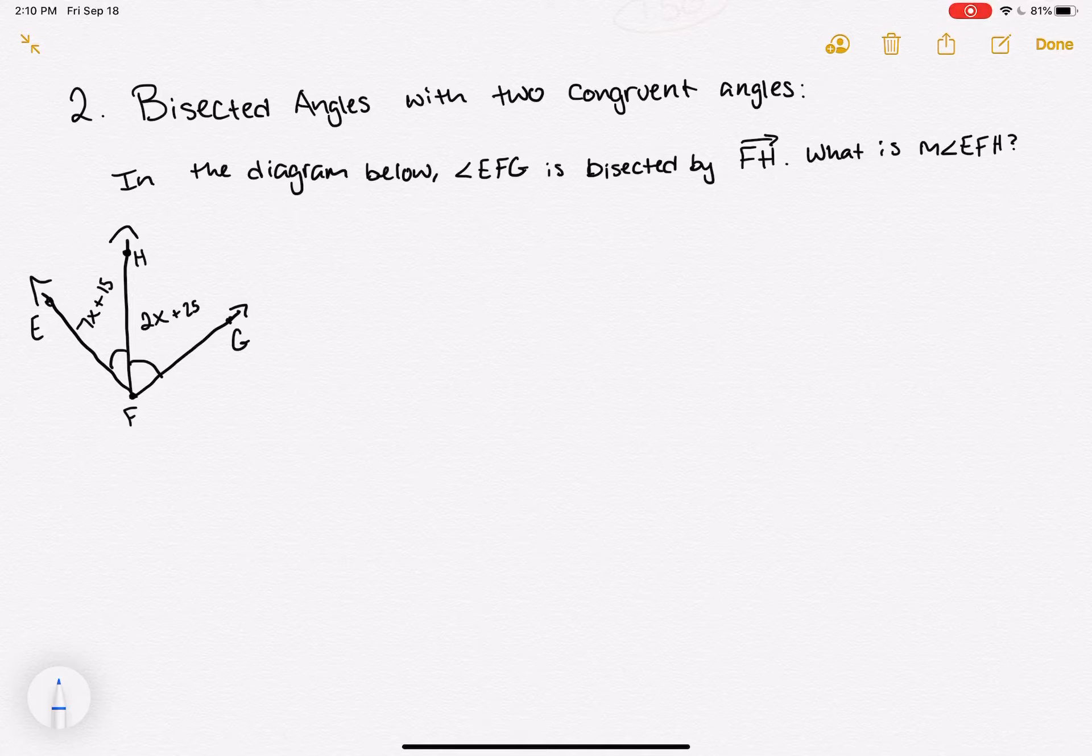So the key to solving a question like this is recognizing that bisected means you have two congruent pieces. So these angles that are pictured here, angle EFH and angle HFG are congruent.